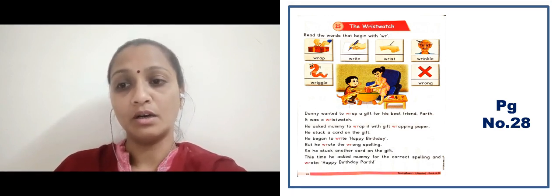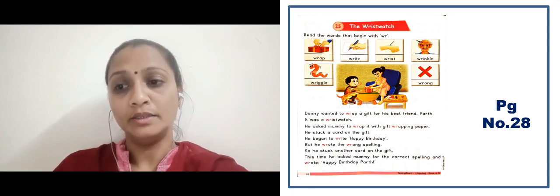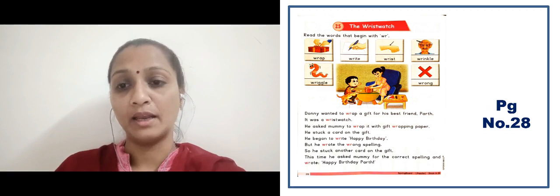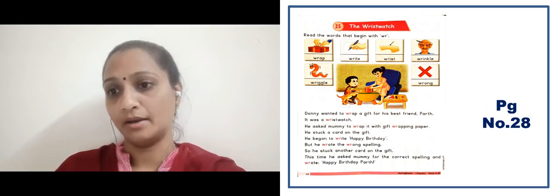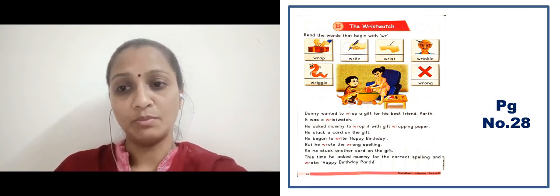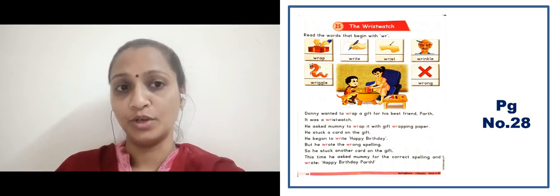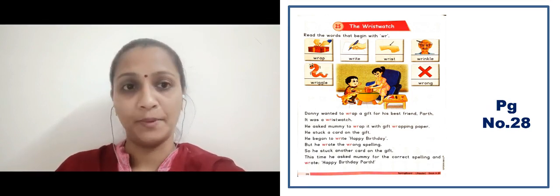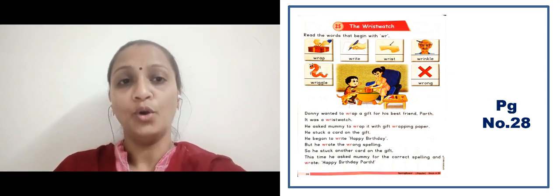So he stuck another card on the gift. This time he asked mommy for the correct spelling and wrote 'Happy Birthday' properly — usne mommy ko sahi spelling poocha aur fir unhone likha 'Happy Birthday'. In this way you have to read this and revise.